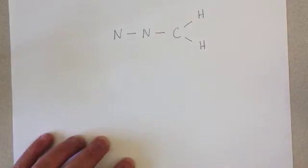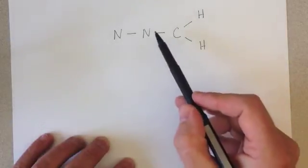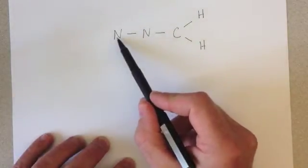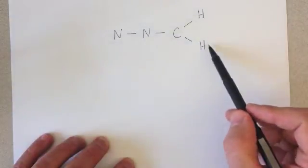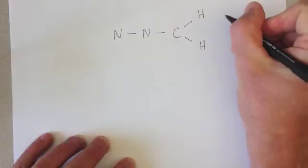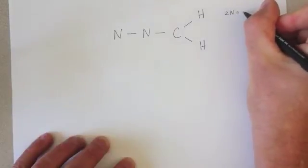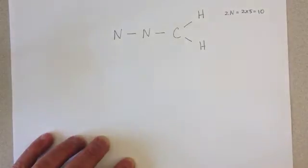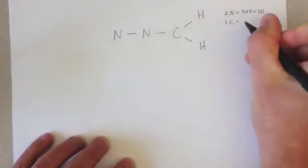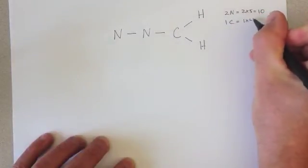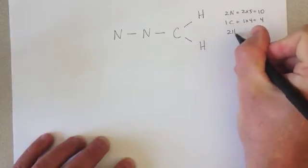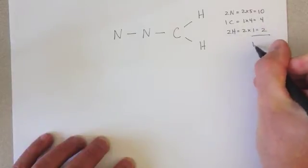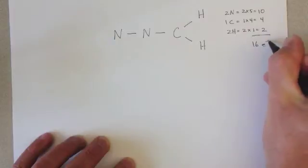Okay, so the first thing to do when trying to satisfy the octet of each of these atoms is figure out how many electrons you have to work with. And so we have two nitrogens, a carbon, and two hydrogens. Each nitrogen can give us five valence electrons. So we have ten valence electrons from our nitrogen. Our one carbon gives us four valence electrons, and each hydrogen gives us one valence electron to work with. So we have a total of sixteen valence electrons to work with.